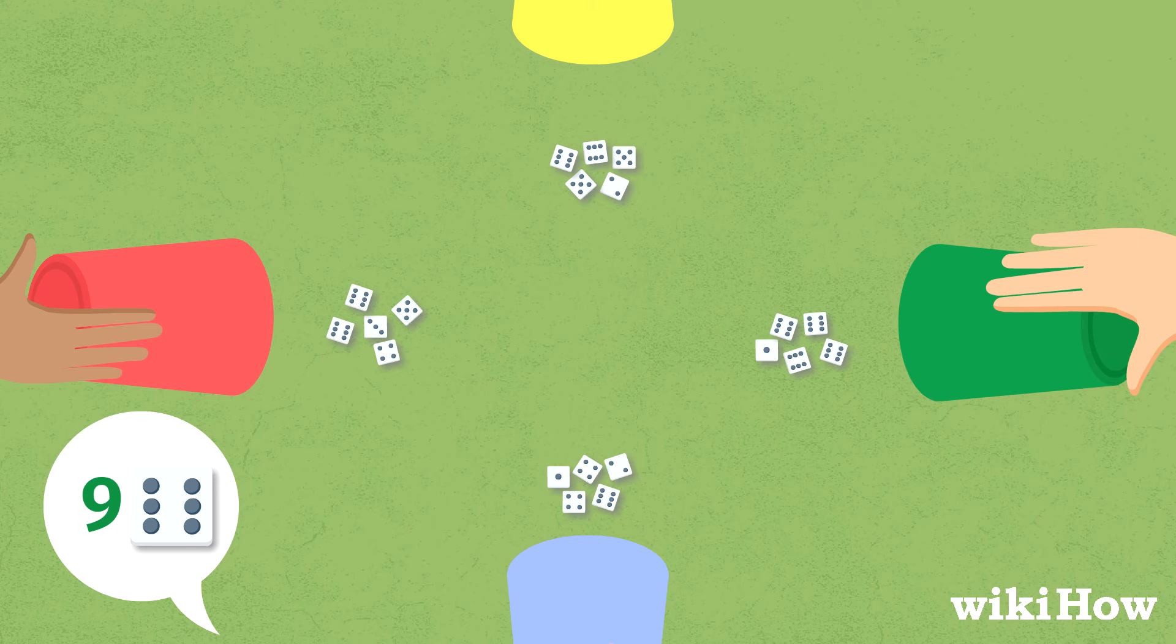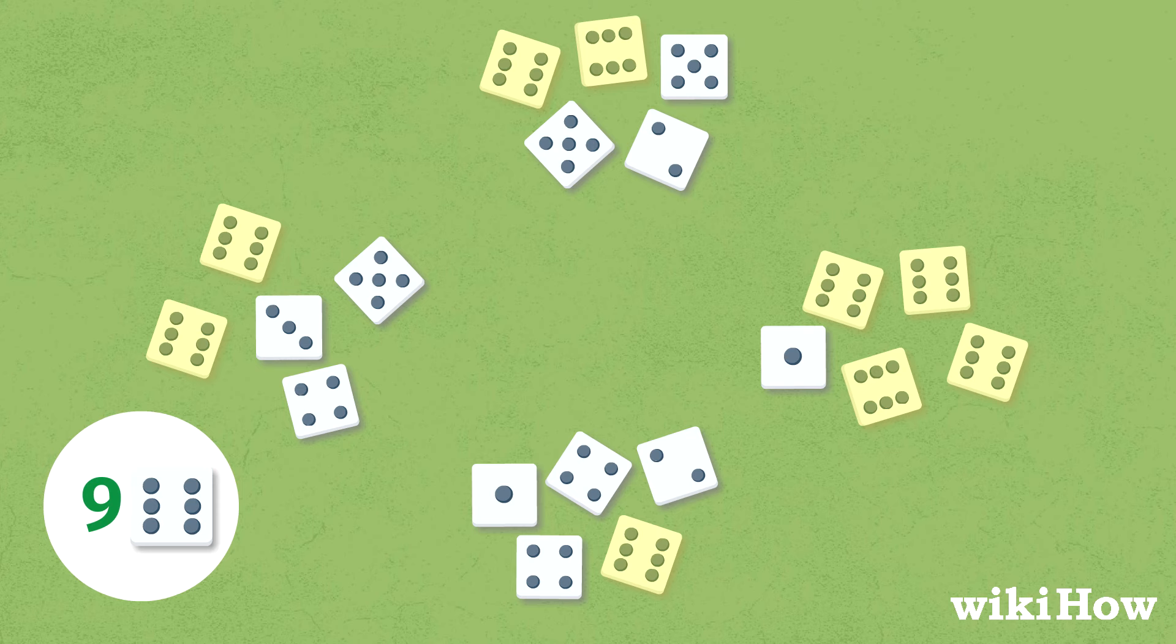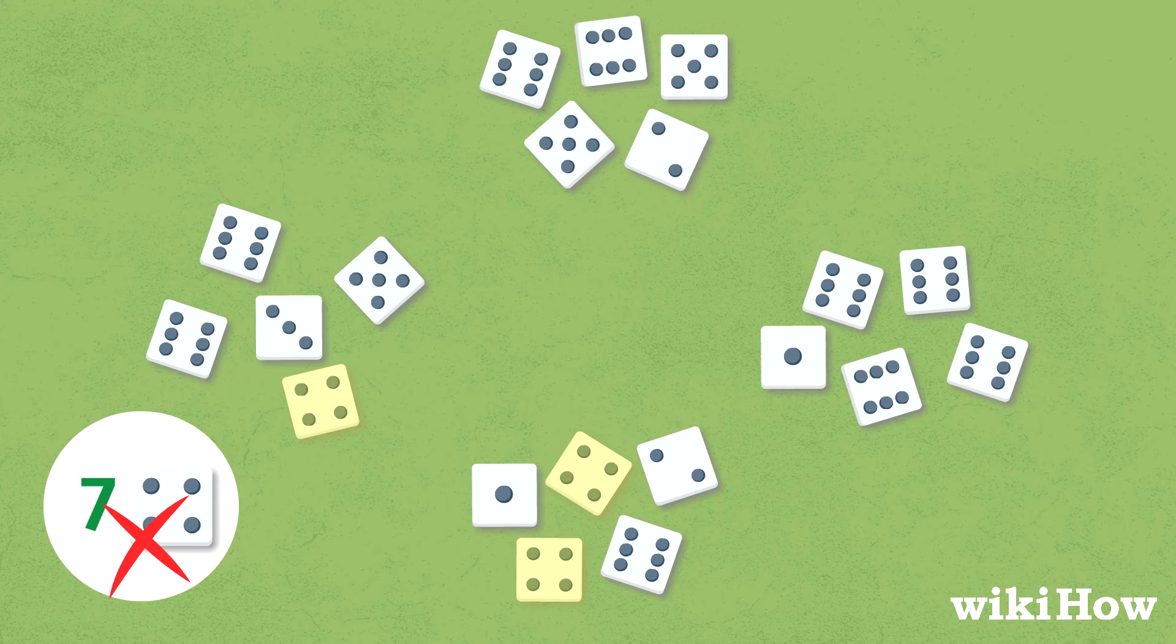If the bid is correct, or if there are more faces than the bidder stated, the bidder wins the challenge, and the challenger loses one die. If there are fewer faces than the bidder stated, the bidder loses one die.